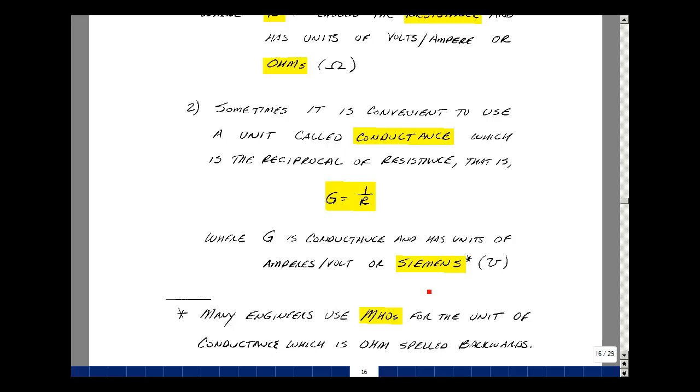Now the symbol used for Ohm is the Greek character Omega, and since conductance is the reciprocal of resistance, we use the reciprocal of the symbol for Omega. Now some engineers don't use the word Siemens, but actually use a term called Mohs, which is Ohm spelled backwards, so you might see it either way as Siemens or as Mohs, but again, the symbol would be the reciprocal of the Omega symbol.